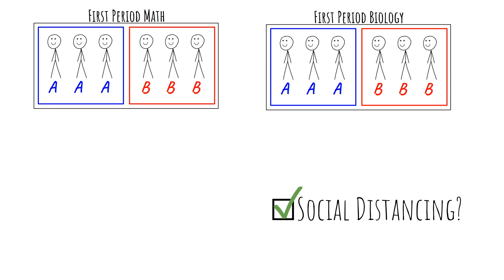The only thing left to do is figure out how to assign each student to either the A group or the B group. And at first this sounds really easy — you just randomly assign half of each first-hour class to A and the other half to B, and you've met your social distancing guidelines. Every single classroom has been partitioned so that during the A week you have enough space to spread out desks, and during the B week likewise you have plenty of space to spread out and achieve your social distancing goals.